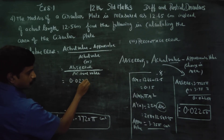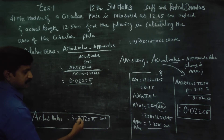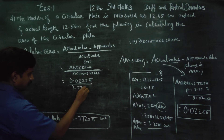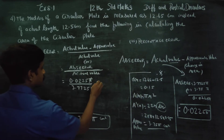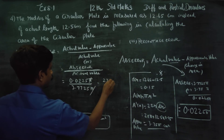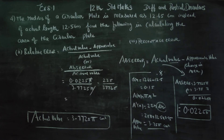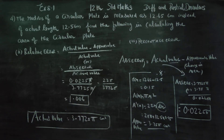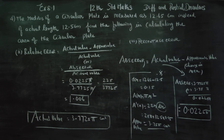Relative error = absolute error ÷ actual value = 0.0225π ÷ 3.7725π = 0.0225 ÷ 3.7725. Dividing these gives approximately 0.006. So the relative error is 0.006. Absolute error and relative error are the two main types.